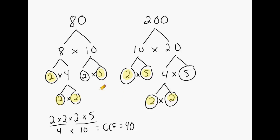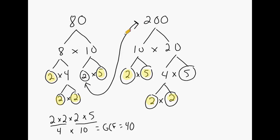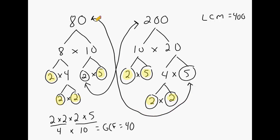Now to find the least common multiple of 80 and 200, you take the prime numbers that were not shaded — the leftovers on one side of your factor tree. On the side of 80, we have a 2 that was left unshaded. You take that unshaded prime number and multiply it by the top of your other factor tree. So if we multiply 2 by 200, that equals 400. The LCM of 80 and 200 is 400. We can verify this by taking the unshaded 5 from the other factor tree and multiplying by 80 — 80 times 5 is also equal to 400.